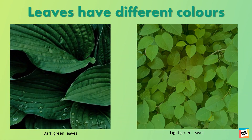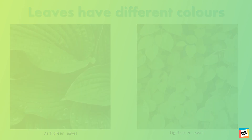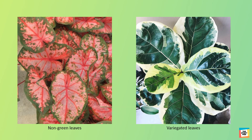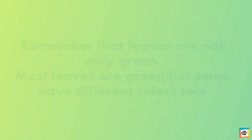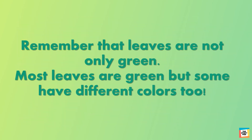Leaves have different colors. They can be of different shades of green, or they could be non-green, or variegated. Remember that leaves are not only green — most leaves are green but some have different colors too.